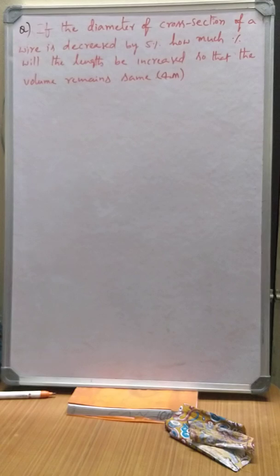Let us take a question from mensuration which looks somewhat typical. If the diameter of cross-section of a wire is decreased by 5%, how much percent will the length be increased so that the volume remains same?